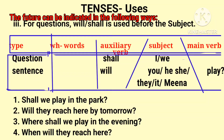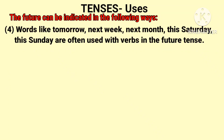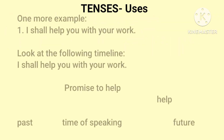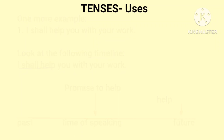For a question, the structure is auxiliary verb plus subject plus main verb. For example: Shall we play in the park? Words like tomorrow, next week, next month, this Saturday are often used with verbs in future tense. Let me explain with a timeline. I shall help you with your work — this is a promise to help.